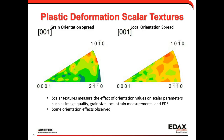One question worth asking is whether metrics like Grain Orientation Spread and Local Orientation Spread can be correlated with orientations — that is, are certain orientations going to deform more easily than others? We can look at this as a scalar texture, examining texture effects on different parameters. Showing scalar textures on the GOS and Local Orientation Spread values, we see a few hot spots in the distribution indicating that some grains are deforming more than others due to orientation effects.